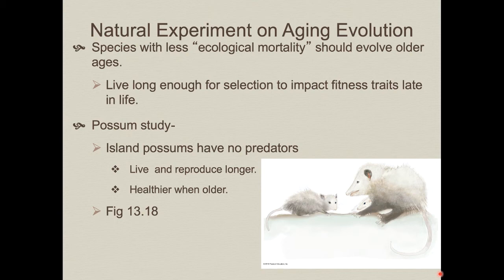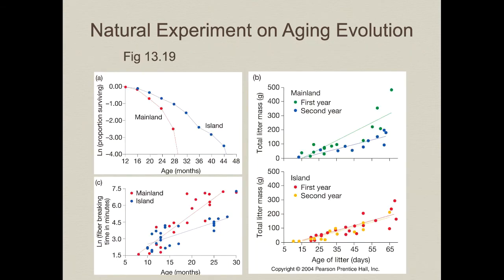Data from this study show survival of mainland versus island populations. For mainland possums, after about two years there's a sharp drop-off in likelihood of surviving, and they usually don't make it past 28–29 months. Island populations show a much less steep decline and can live to almost four years — nearly twice the lifespan. To assess health, researchers used a surrogate: they stressed possum tails to find their breaking point. Mainland possum tails became ossified and hardened — hard to break — indicating arthritis-like deterioration.